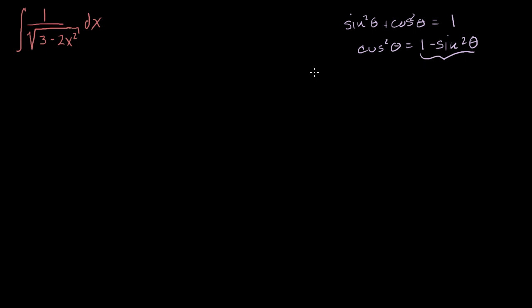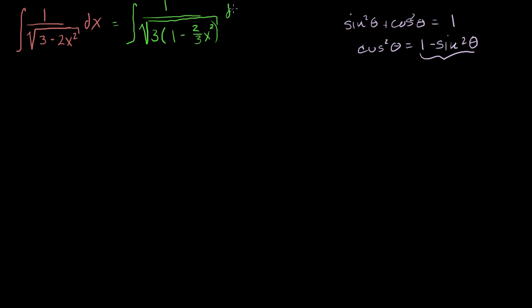Maybe I can do a little bit of algebraic manipulation to make this look a lot like that. The first thing, I would like to have a 1 here — that's how my brain works — so let's factor out a 3 out of this denominator. So this is the same thing as the integral of 1 over the square root of 3 times 1 minus 2/3 x squared. All I did was factor the 3 out of this expression.